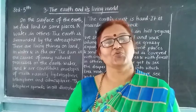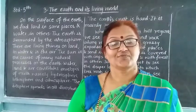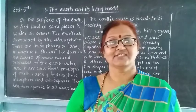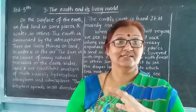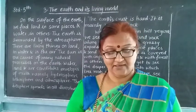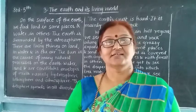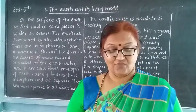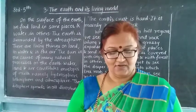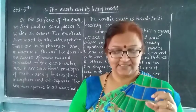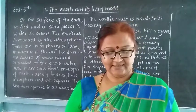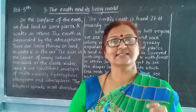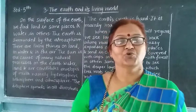Much of the earth's surface is occupied by water. The lithosphere extends under this water as well. About a third of the surface of the earth consists of land. A vast continuous stretch of land is called a continent. The land on earth is divided into seven continents.